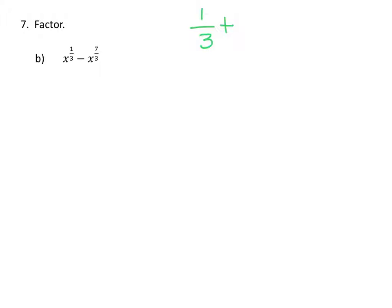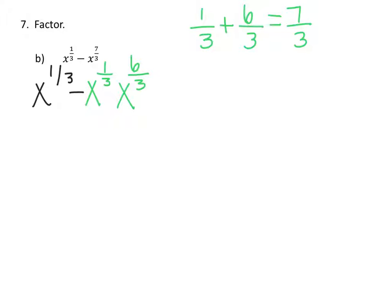If I add six-thirds to one-third, that gives me seven-thirds. So I can change my second term to be x to the one-third times x to the six-thirds, which still equals x to the seven-thirds. So rewriting, the expression becomes x to the one-third minus x to the one-third times x to the six-thirds.